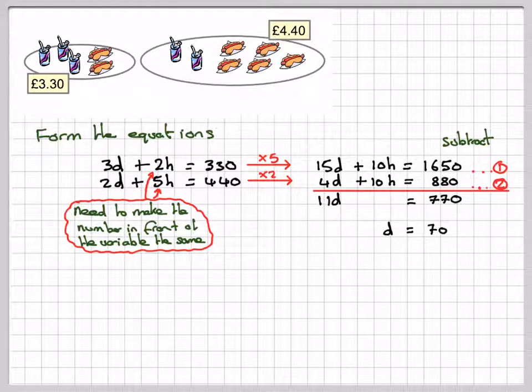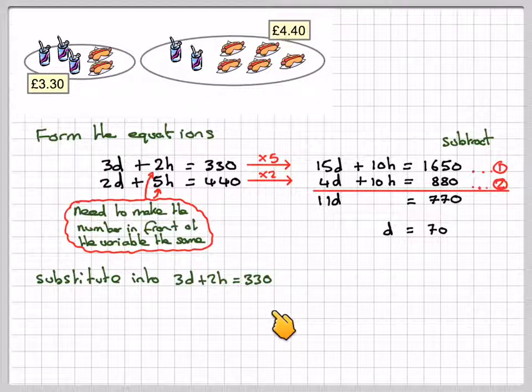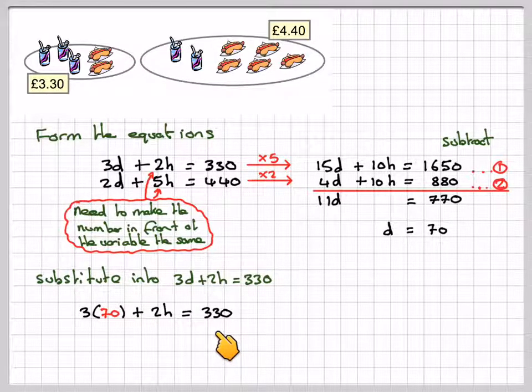Now, I could substitute back into one of these, but it's probably easier to substitute back into one of the original equations because they're much easier numbers. So substituting into 3D plus 2H is equal to 330. We're going to have 3 times 70, 3 times D, plus 2H is equal to 330. 3 times 70 is 210, plus 2H is 330.